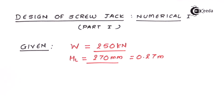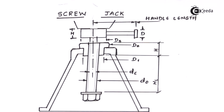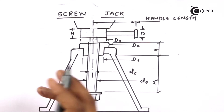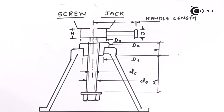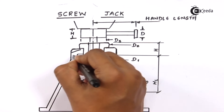As far as screw jack or any design problem is concerned, it is always advised to draw figures for that particular component and show the dimensions and diameters. We need to draw the figure and show the dimensions. It need not be very accurate or very precise — a rough figure is fine. The only requirement is that dimensions be specified; that is very important.